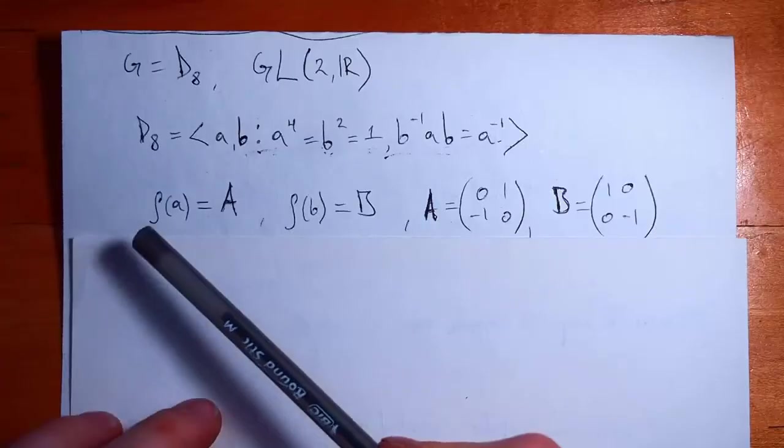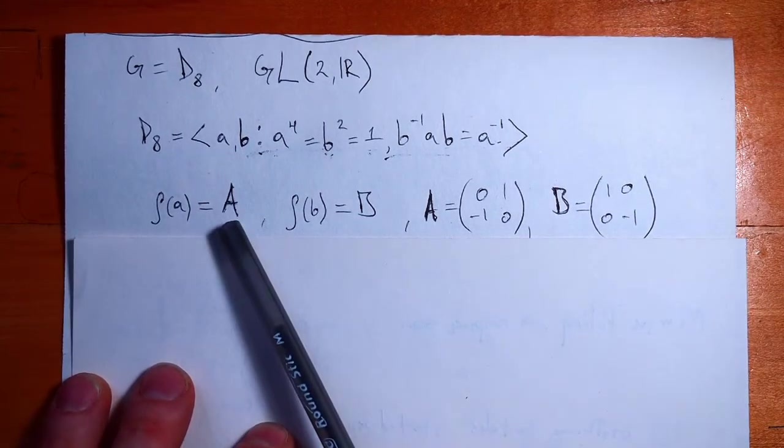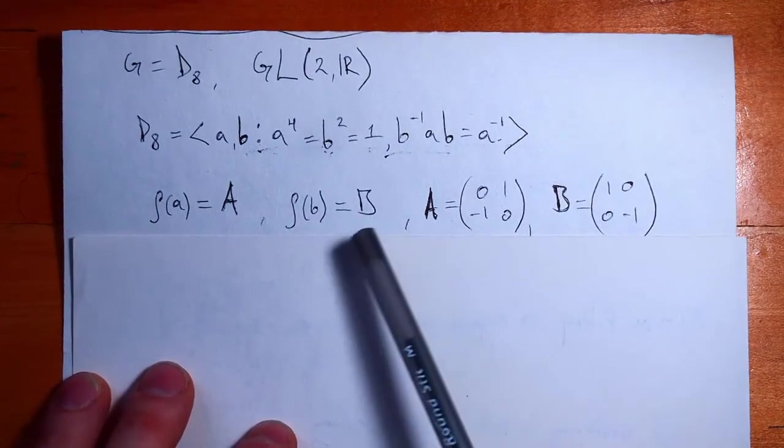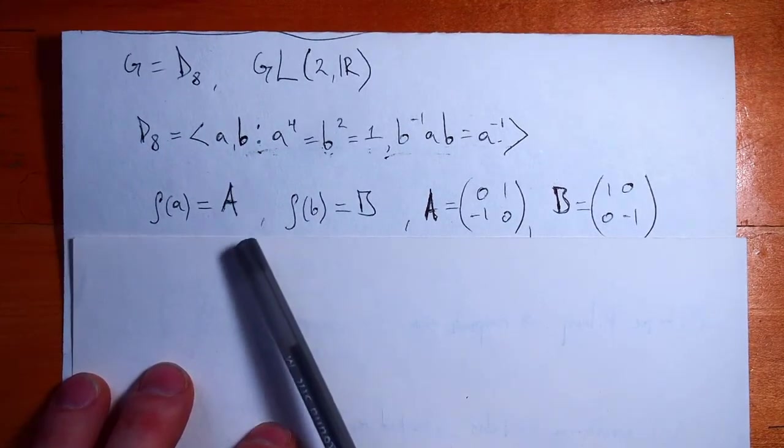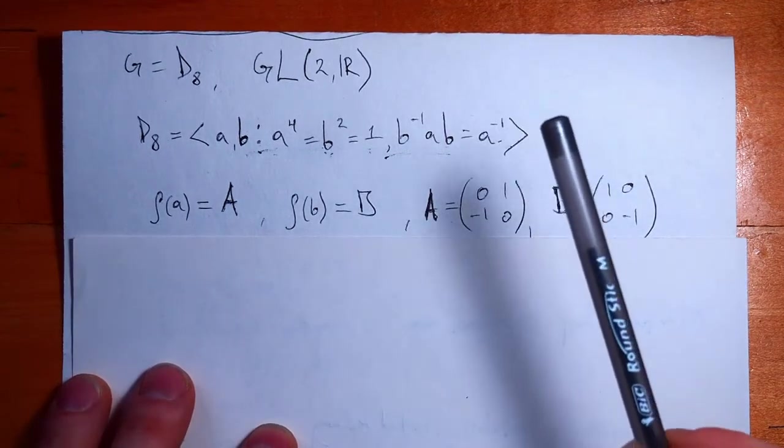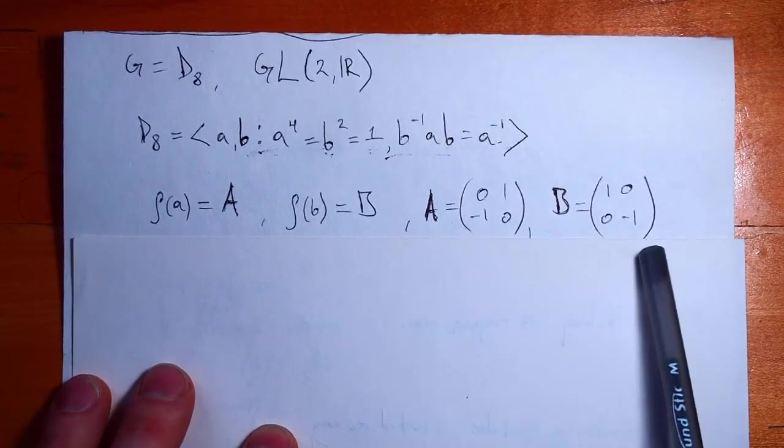Here's the magic part. Now consider a map rho that takes in our element A and spits out some capital A, and takes in our element B and spits out capital B. The convention that I'm going to try and stick to is that capital letters denote matrices, and lowercase letters are just abstract group elements, where A is given by this matrix right here, and B is given by this matrix right here.